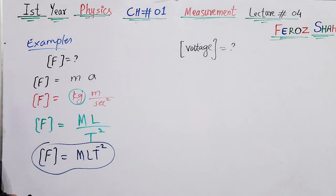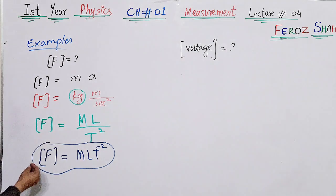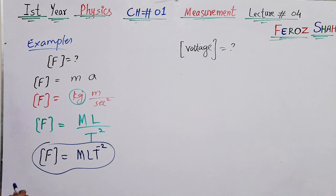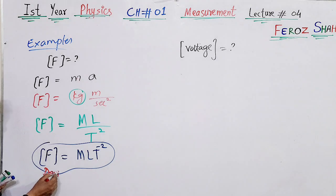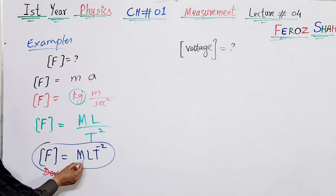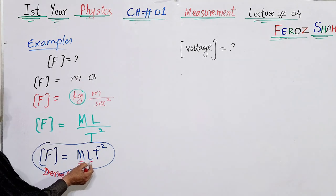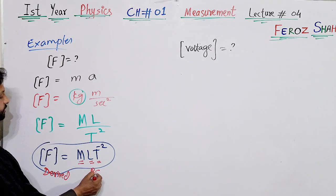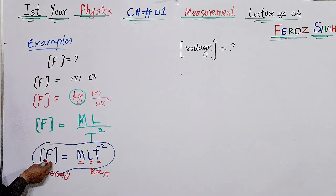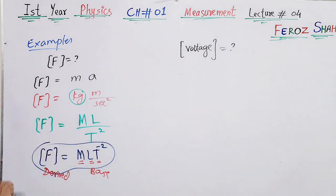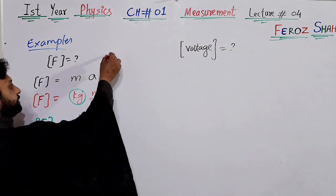Look at the dimensions of force: M·L·T⁻². Force is a derived quantity, but mass is a base quantity, length is a base quantity, and time is a base quantity. This confirms that finding dimensions means the splitting of a derived quantity into its base quantities.